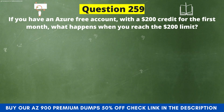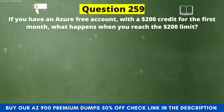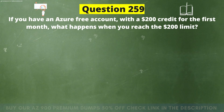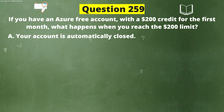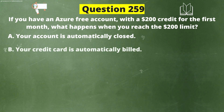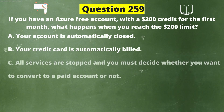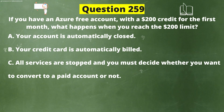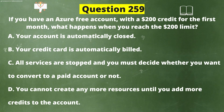If you have an Azure free account with a $200 credit for the first month, what happens when you reach the $200 limit? Option A, your account is automatically closed. Option B, your credit card is automatically billed. Option C, all services are stopped and you must decide whether you want to convert to a paid account or not. Option D, you cannot create any more resources until you add more credits to the account.